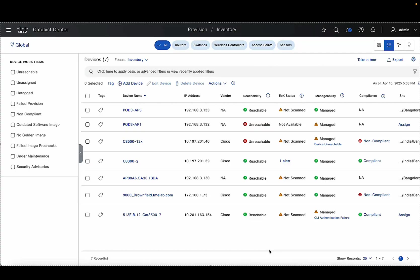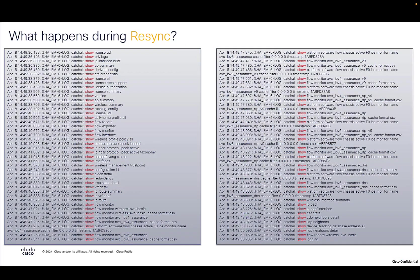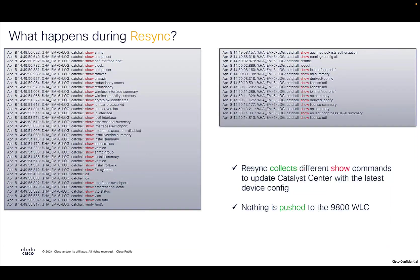The final step to enabling per device config was to resync the wireless controller. So what exactly happens during resync? As you can see on the screen, these are the set of commands which Catalyst Center runs on your wireless controller during resync. All of these commands are show commands. Catalyst Center runs these show commands to collect different outputs from your wireless controller and update Catalyst Center with the latest config. We do not push any configuration onto the 9800 wireless controller.